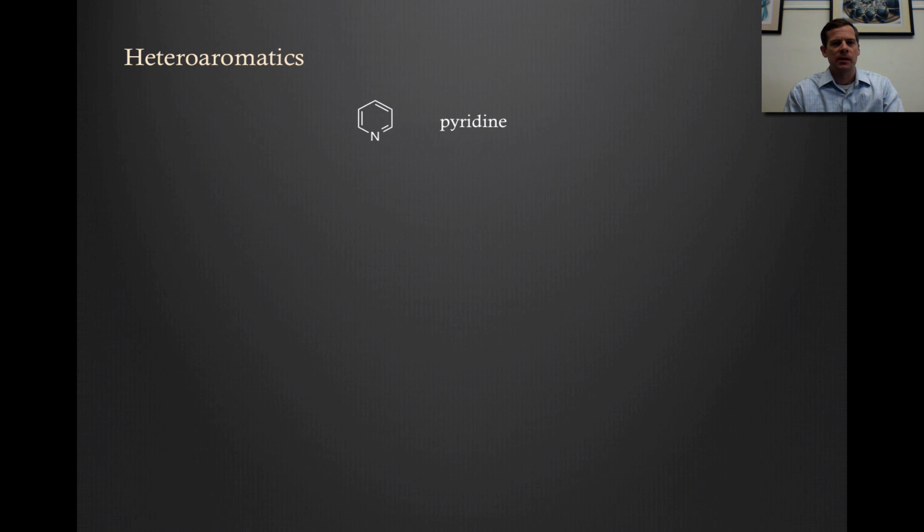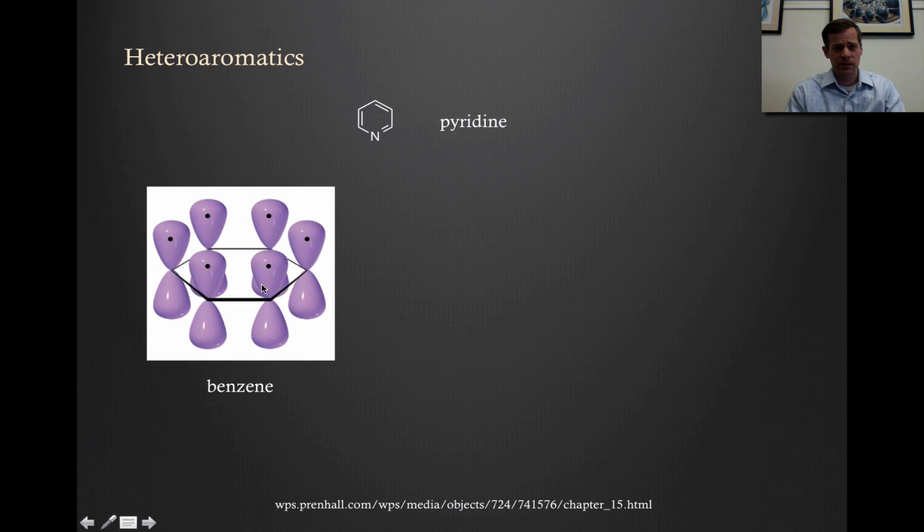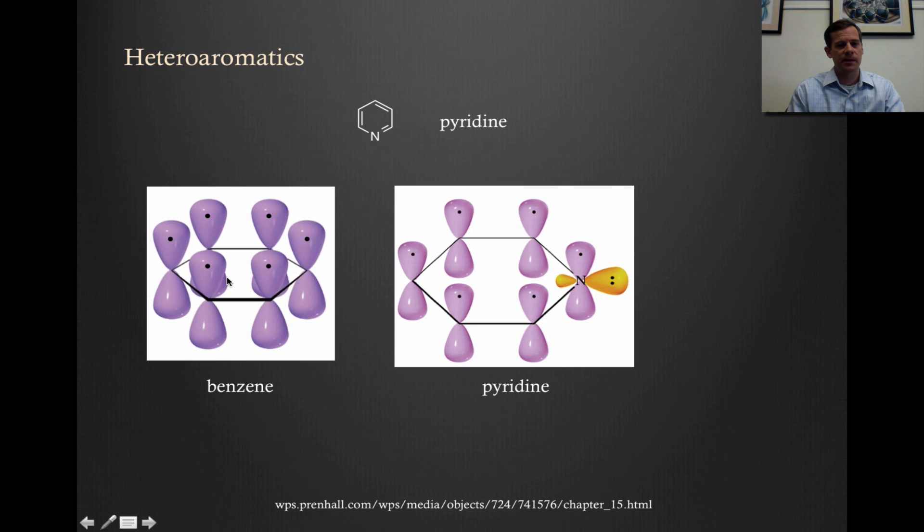We can talk about other aromatics that involve atoms other than carbon. As we learned in the first video, these are called heteroaromatics. One example would be pyridine. This looks very much like benzene except that there's a nitrogen replacing one of the carbons. Our cartoon picture of the orbital situation in benzene shows each carbon donating one p electron to this conjugated pi system along with a single electron. We can have the exact same thing with pyridine, except that instead of one of those carbons, we've got a nitrogen.